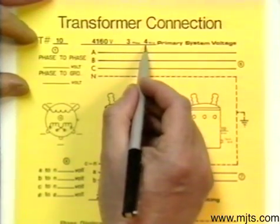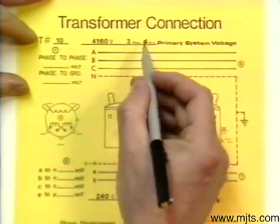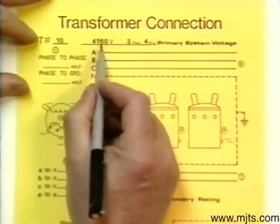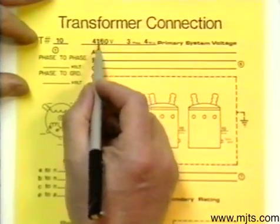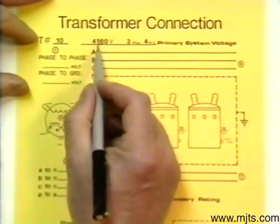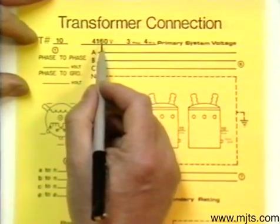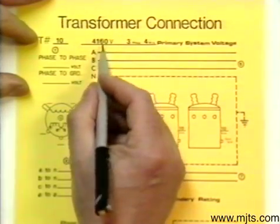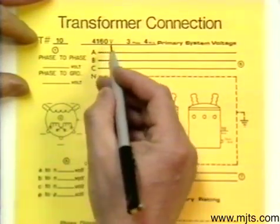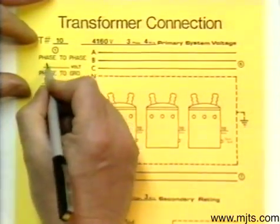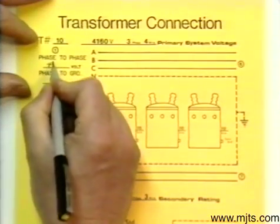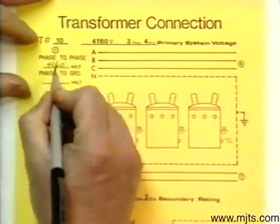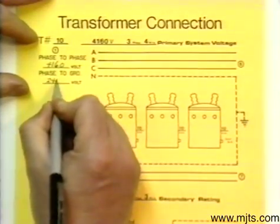That four wire tells us it's a Y system. The system voltage is always a phase-to-phase value, so we've got a phase-to-phase value of 4160. We divide that by 1.73, we'll have the phase-to-ground value, which would be 2400 volts. So let's label our voltages. Phase-to-phase we have 4160, phase-to-ground we have 2400 volts.